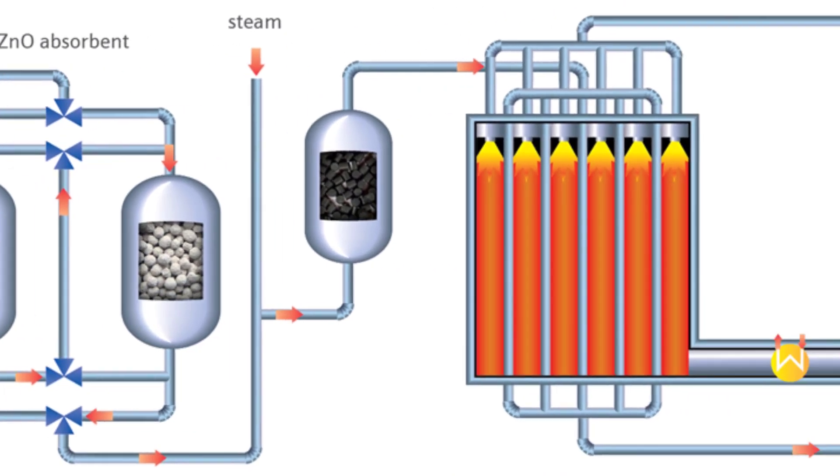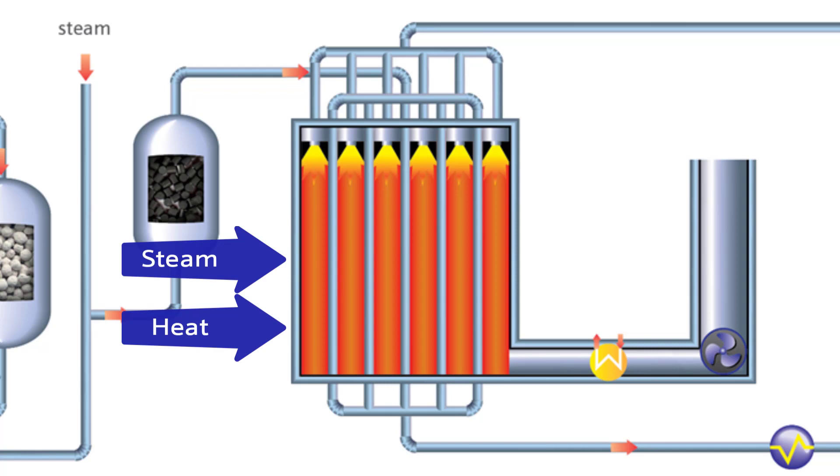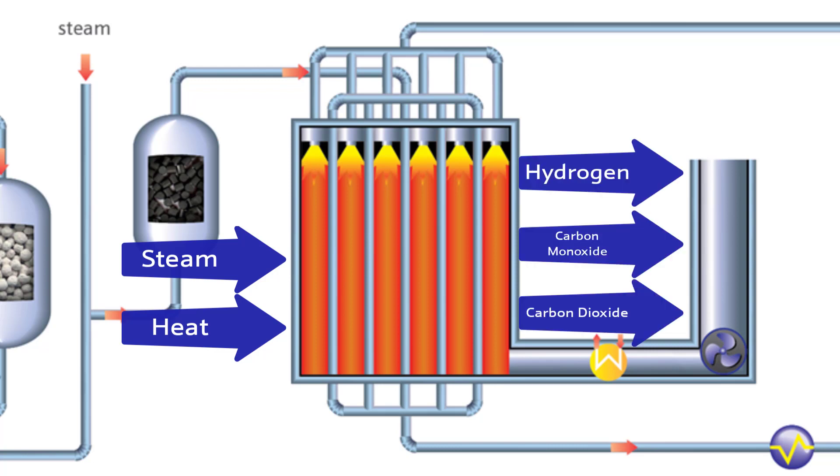Next, the purified feed moves on to the steam methane reformer. Here, steam and high heat are added, and the combined stream flows through packed reformer tubes filled with catalysts to convert the hydrocarbon feed to hydrogen, carbon monoxide, and carbon dioxide.